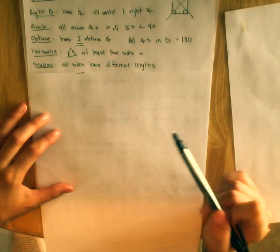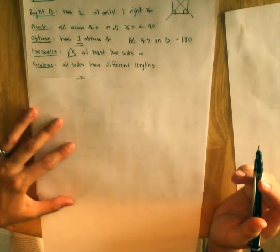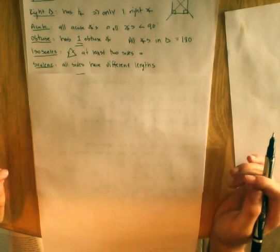Scalene triangle means all sides have different lengths.